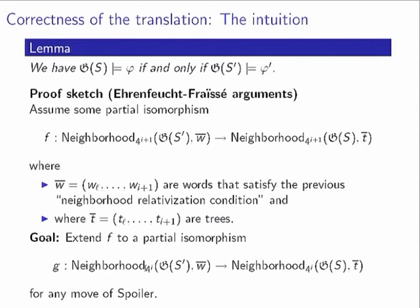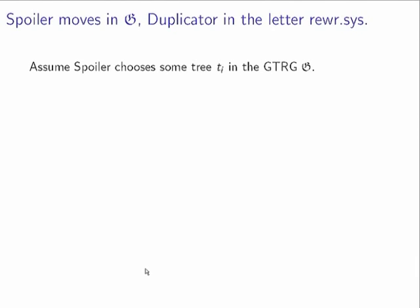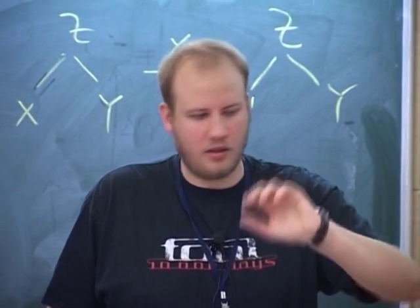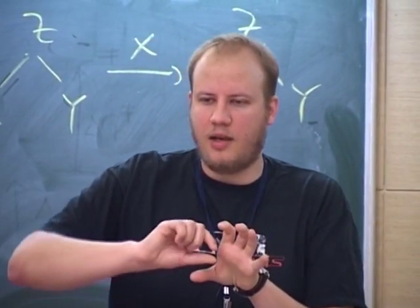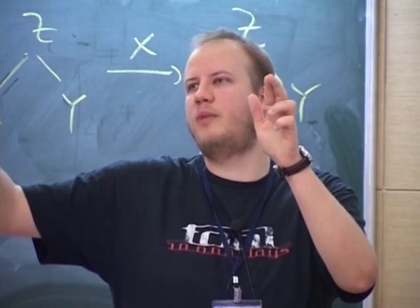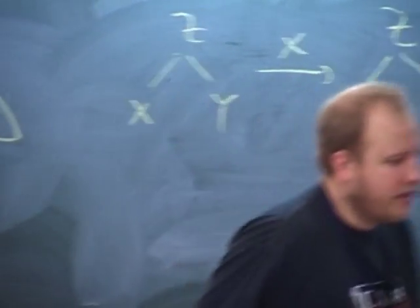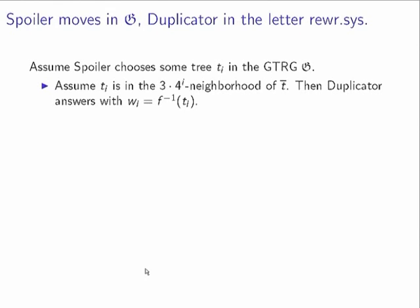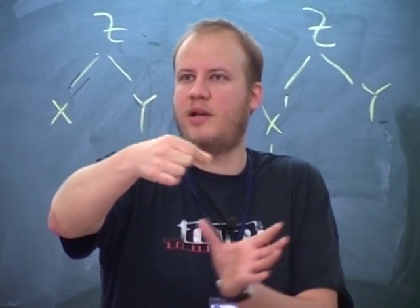How does the game work? The intuition: assume spoiler makes a move in the ground tree rewrite system and we ask how duplicator responds in the letter rewrite system. Assume spoiler chooses some tree in the i-th round. First case: the chosen tree is already close — within radius 3×4^i — to a tree already selected before. Then one can show, using the partial isomorphism only needing to cover a neighborhood of size 4^i, that the partial isomorphism can be extended by applying the same choice as given by the induction hypothesis.